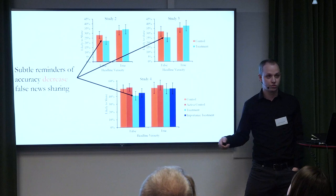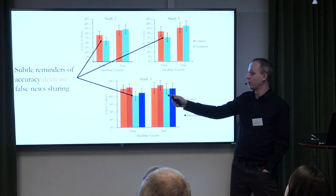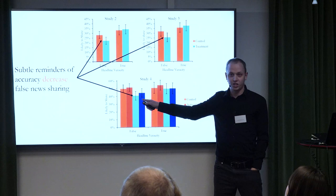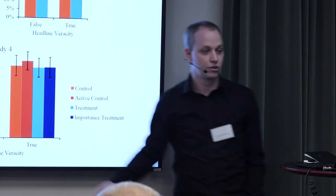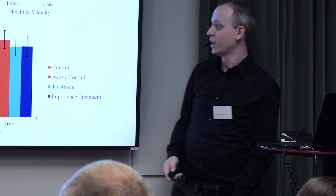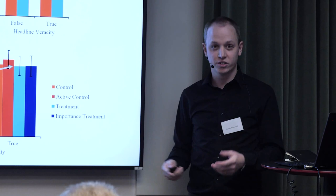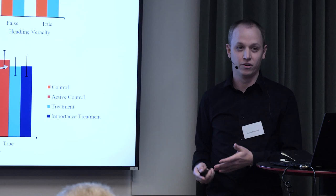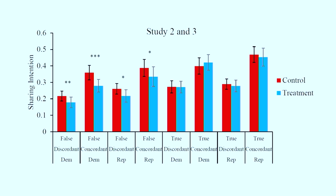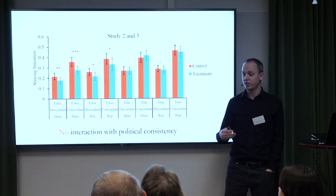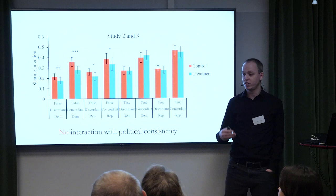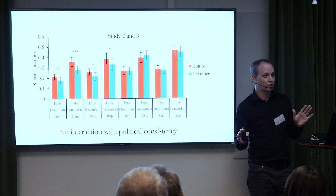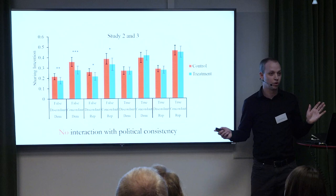We have studies in Italy, France, and Canada that replicate these results. If you remind people about accuracy — compared to no reminder or an active control asking 'is this entertaining?' — you see selectively less sharing of false content. You don't get the same effect for true content — it's only selectively decreasing sharing of false content. This implies that people are sharing this stuff because they're not thinking specifically about whether it's accurate. There's no interaction with political consistency either — people are sharing less regardless of whether it's consistent with their ideology.